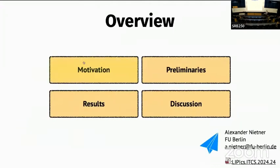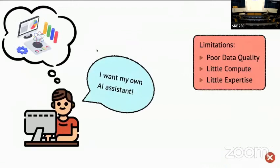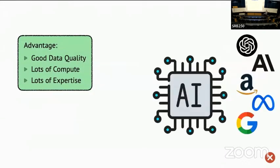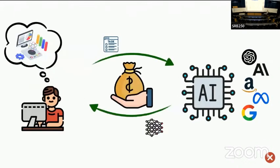Let's dig directly into it and start with motivation. Nowadays everybody wants to have some AI assistant because we are all too lazy to code or write our emails by ourselves. If you want to do all this by yourself, there are several limitations: most of us don't have a lot of good data, most of us just have a computer not a huge server room, and most of us have little expertise coding these systems. In contrast, the well-known big companies have a lot of good data, loads of compute power, and they've hired all the experts from the fields.